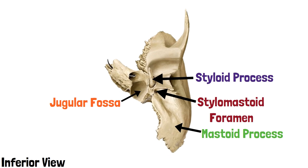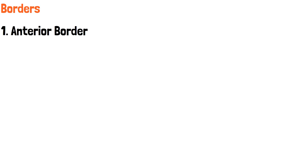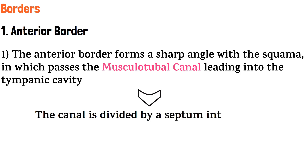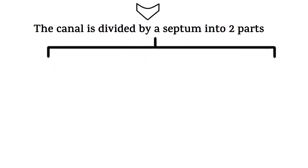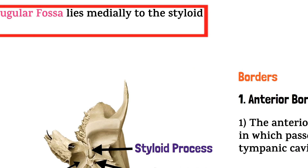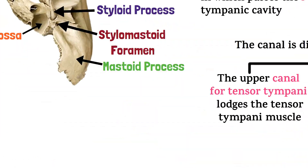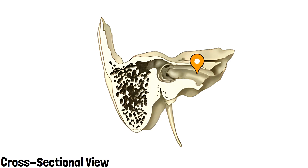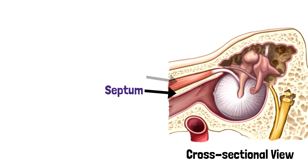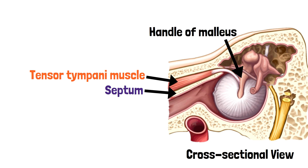Now let's discuss the features of the borders of the petrous part. First, the anterior border forms a sharp angle with the squama, through which passes the musculotubal canal, leading into the tympanic cavity. The canal is divided by a septum into two parts: the upper canal for tensor tympani lodges the tensor tympani muscle, and the lower canal is for the auditory tube. In the cross-sectional view, this is the musculotubal canal divided by a septum — the upper canal is for the tensor tympani muscle, which passes through and attaches with the handle of the malleus, and the lower canal is for the auditory tube.